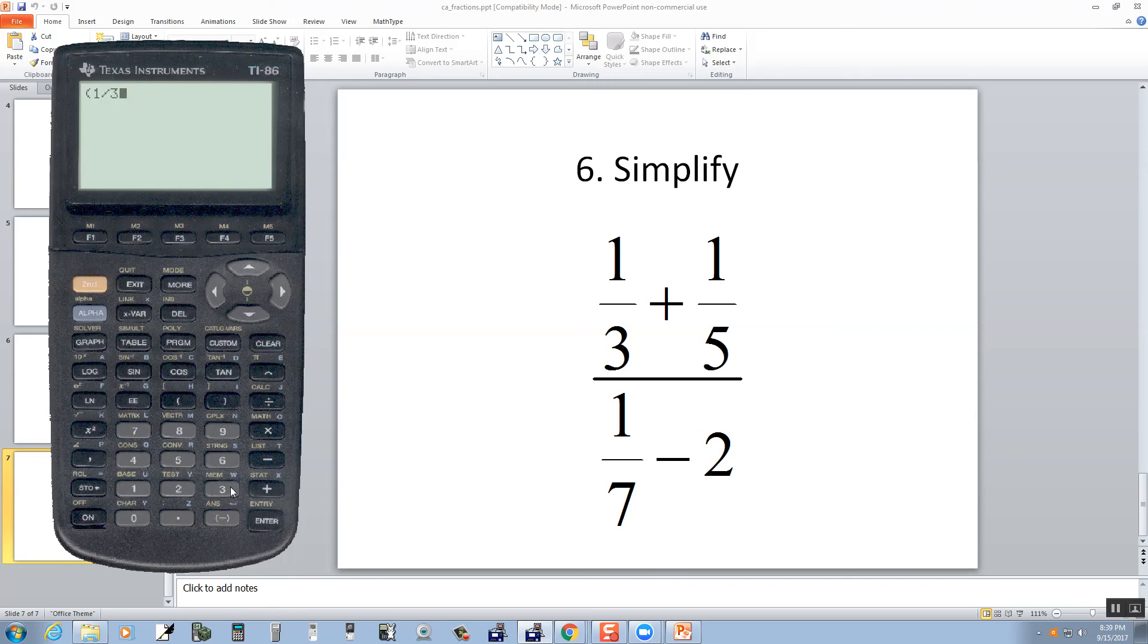So I'll do a beginning parentheses, 1 divided by 3, plus 1 divided by 5, closing parentheses, divided by beginning parentheses, 1 divided by 7, minus 2, closing parentheses, and then I'll press enter.